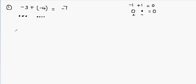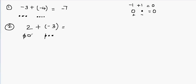Another example is 2 plus negative 3. Now you have two positive counters, so we draw two positive counters here. Then you add three negative counters to it. We know that positive and negative cancel out each other, so one positive counter cancels out one negative counter, and this cancels out another negative counter.